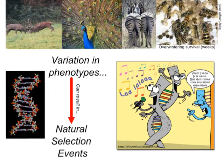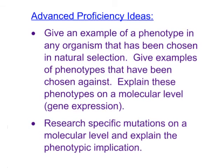For advanced proficiency, you could give an example of a phenotype in some organism that's been selected for in natural selection, or give an example of phenotypes that have been selected against. You can explain these phenotypes on a molecular level through gene expression, or research specific mutations on a molecular level and explain the phenotypic implications. You may also choose something else — questions, examples, or interesting things you'd like to research and explain. Thanks, and we'll see you in class.